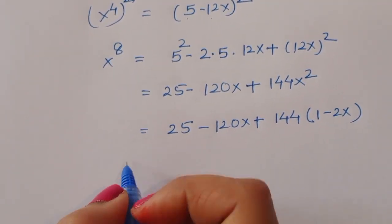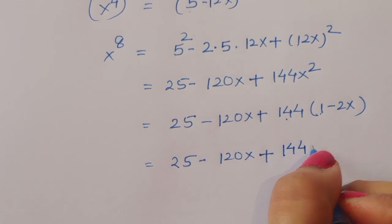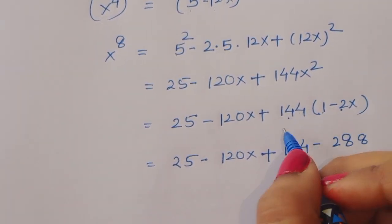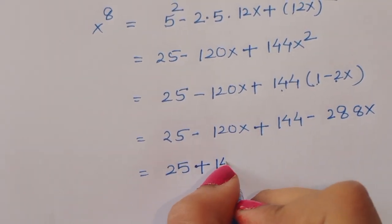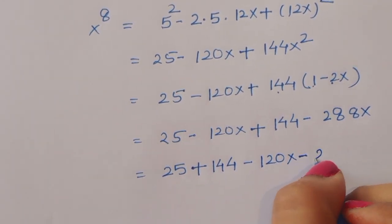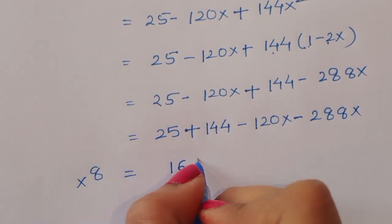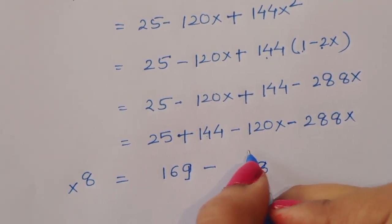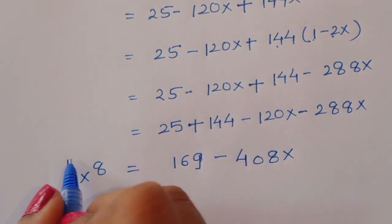Substituting x² = 1 - 2x from equation 3: x⁸ = 25 - 120x + 144(1 - 2x) = 25 - 120x + 144 - 288x. Collecting constant and x terms: x⁸ = 169 - 408x. This is equation number 6.